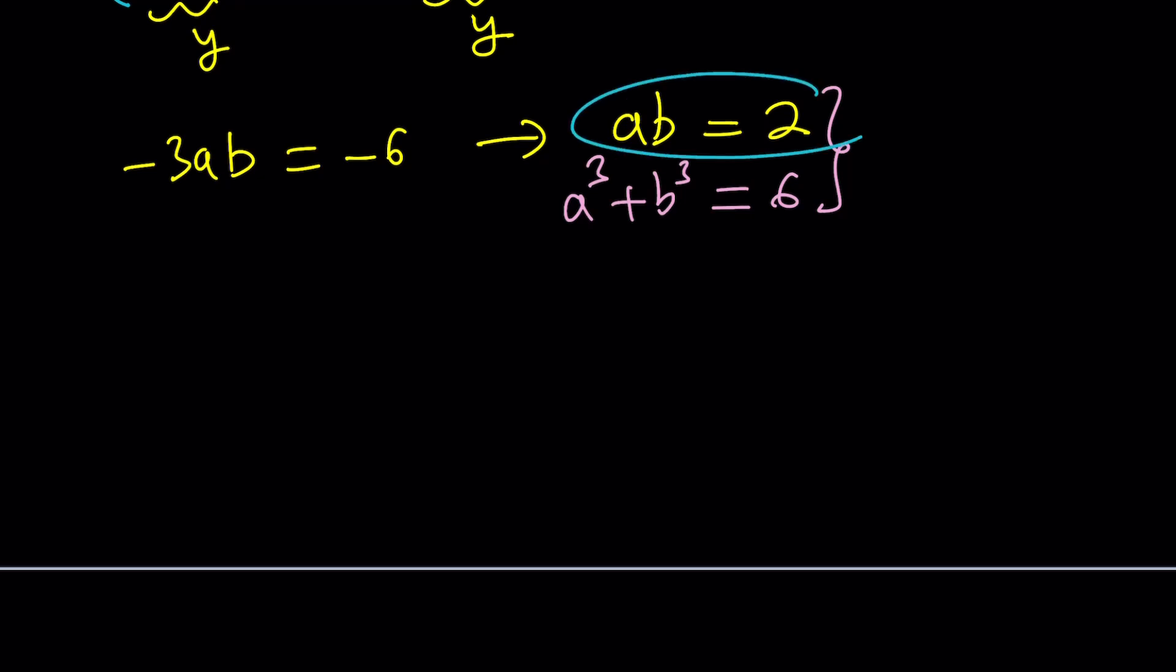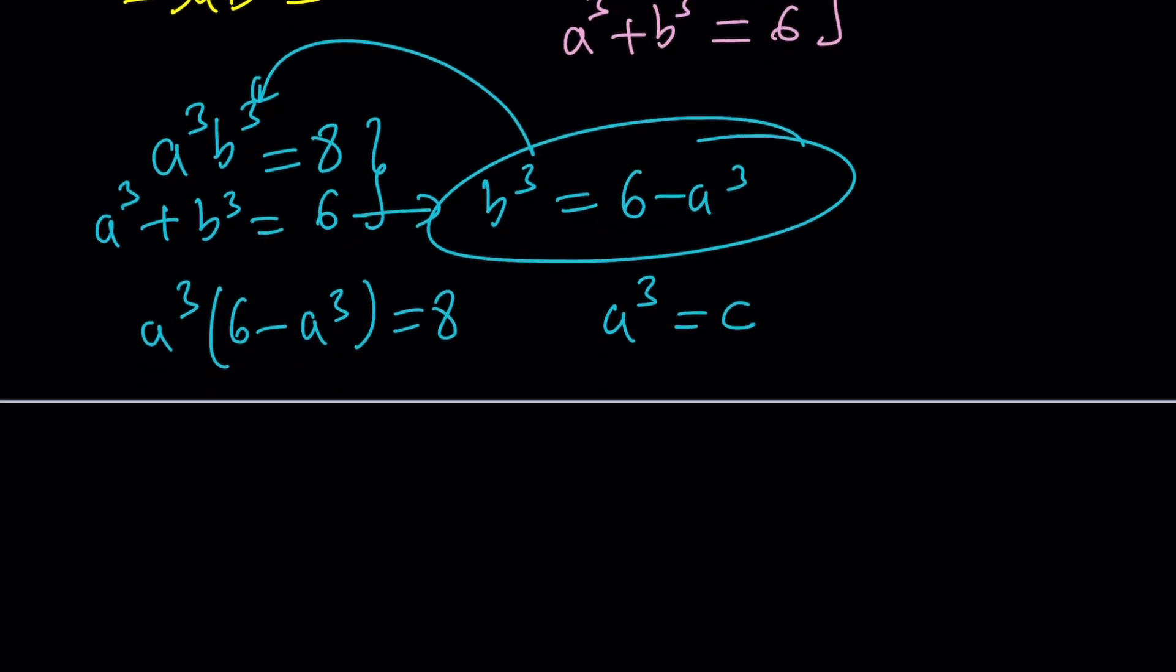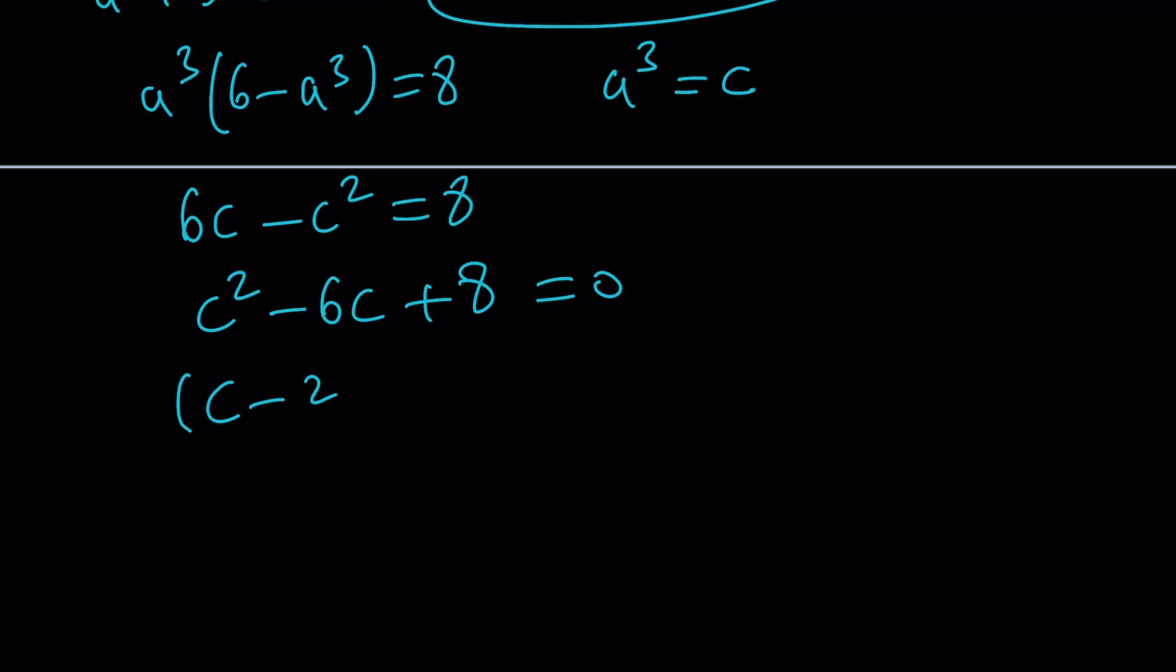So, let's go ahead and cube both sides. That gives us a cubed, b cubed equals 8, and a cubed plus b cubed equals 6. So, it basically reduces to finding two numbers whose product is 8 and whose sum is 6. And I'm hoping that you do know that those numbers are. Let's find out what those numbers are. Suppose, pretend you didn't know it. So, you can replace b cubed with 6 minus a cubed, and then go ahead and plug it in here. That gives you a cubed minus 6 minus a cubed equals 8. Now, replace a cubed with c, another variable so that you can turn this into a quadratic. This gives you 6c minus c squared is equal to 8. And finally, this becomes c squared minus 6c plus 8 equals 0, which can be factored as c minus 2 times c minus 4 equals 0.